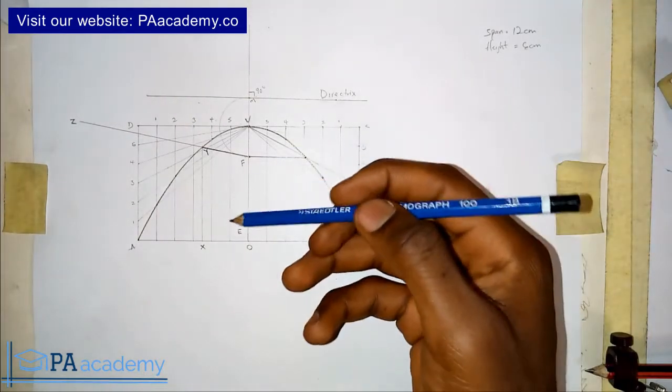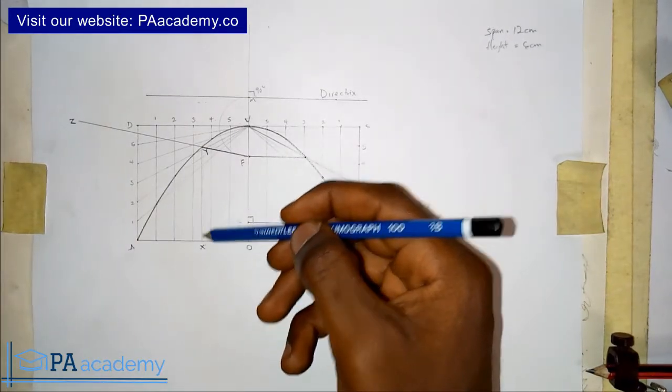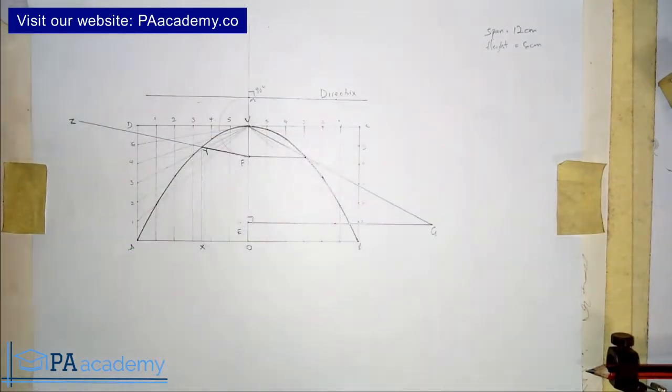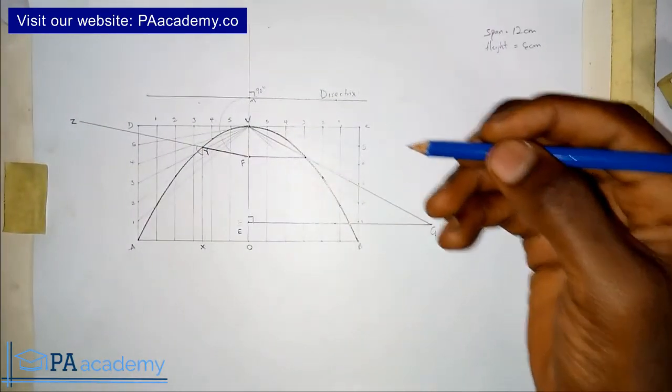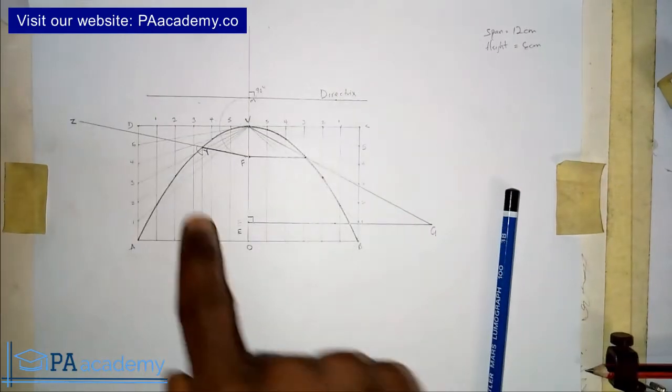Now, if you look at it closely, this X, Y, Z is forming an angle. This angle. It's forming an angle. So what you are going to do next is to bisect the angle.